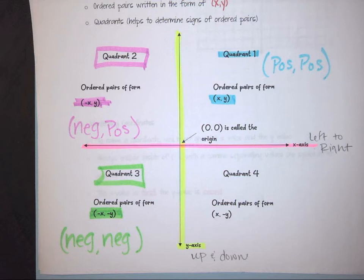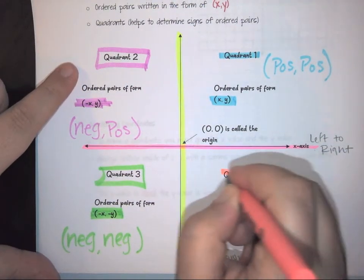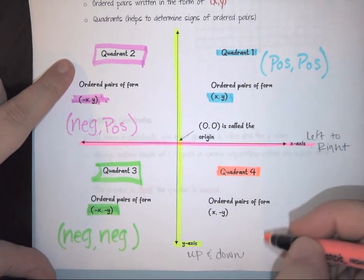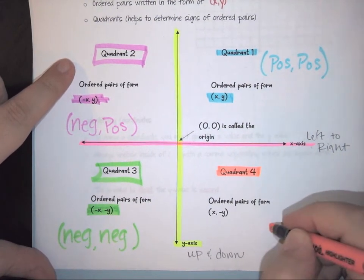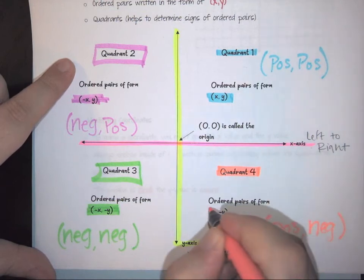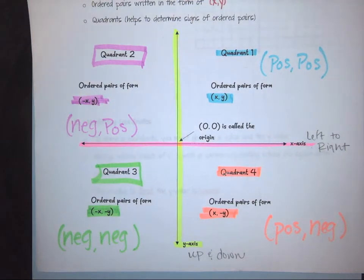Last but certainly not least, we have quadrant four. Quadrant four is going to be our positive-negative version, and its coordinate is going to be (x, negative y).